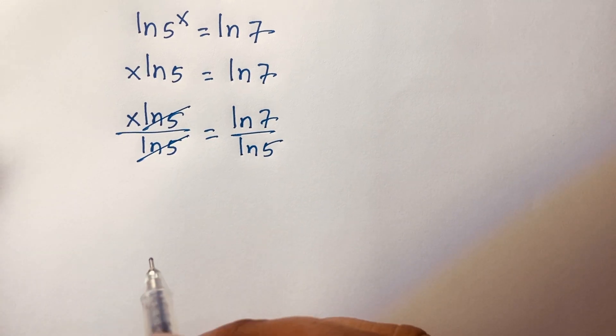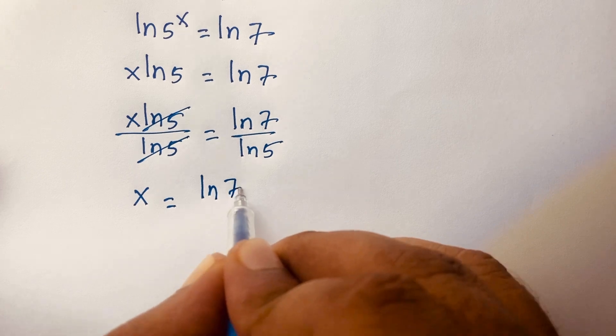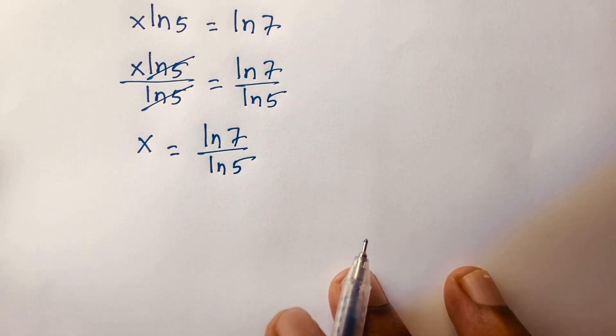So we'll find out here is x is equal to ln 7 over ln 5. Then if I use calculator, we'll find out the value of x.